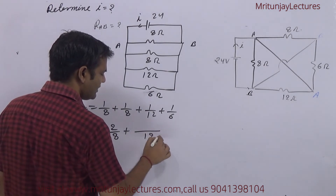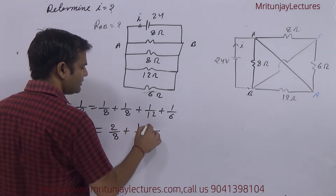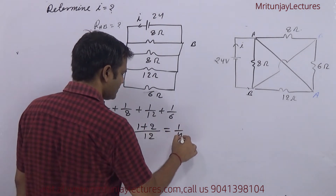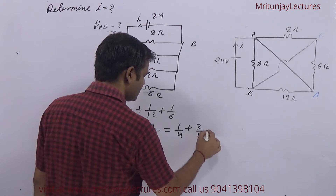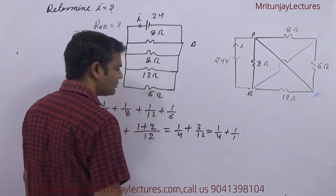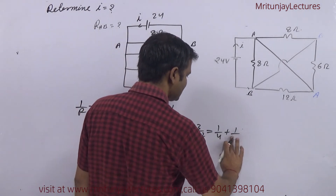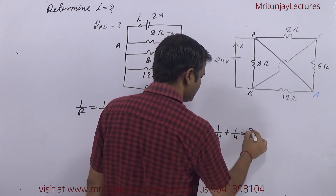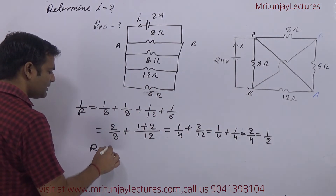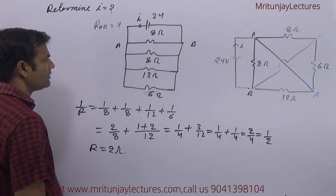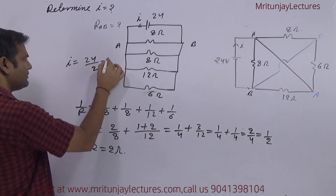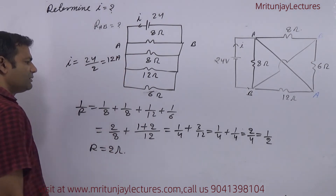That is twelve, so one by four plus three by twelve equals one by four plus one by four — that is three by four, which is also written as one by four. So two by four means one by two, so equivalent resistance between A and B is two ohm. Therefore, current is twenty-four divided by two — finally twelve ampere.